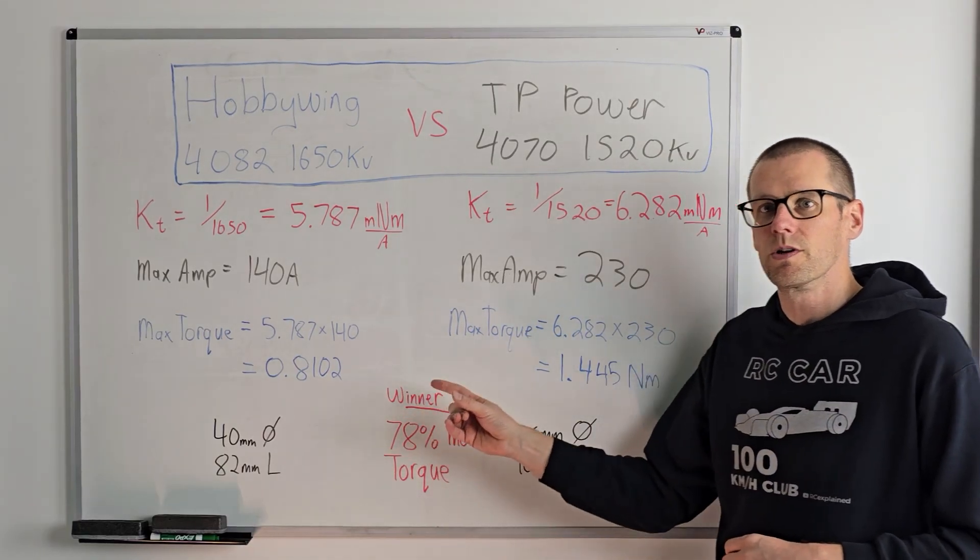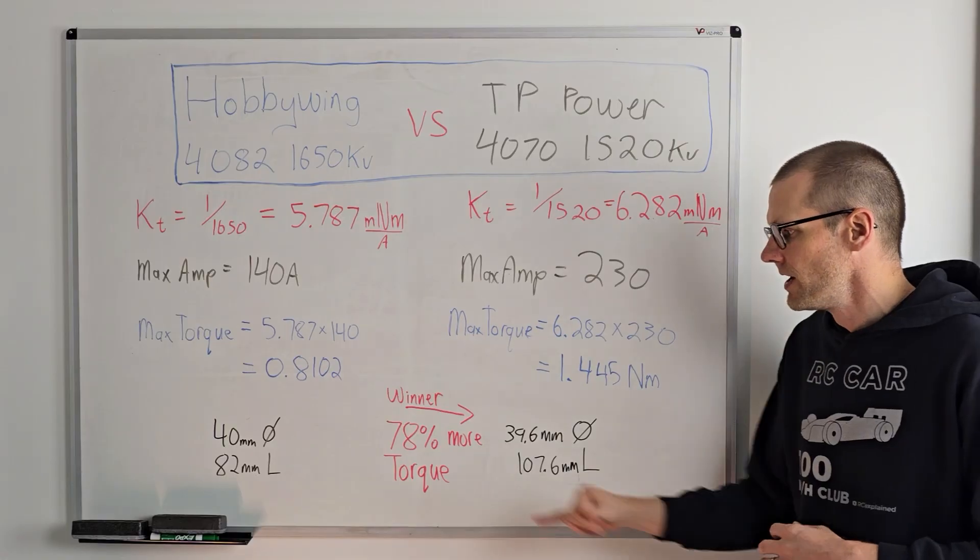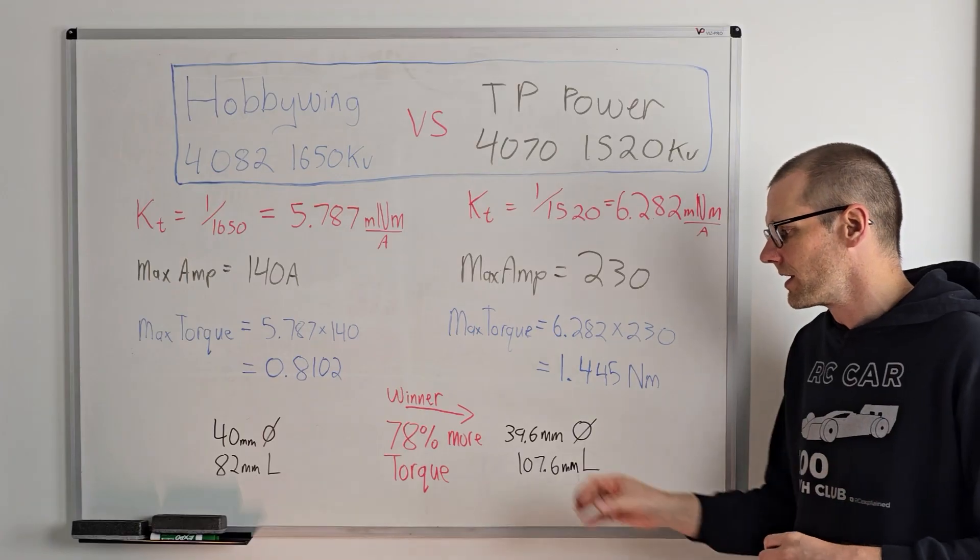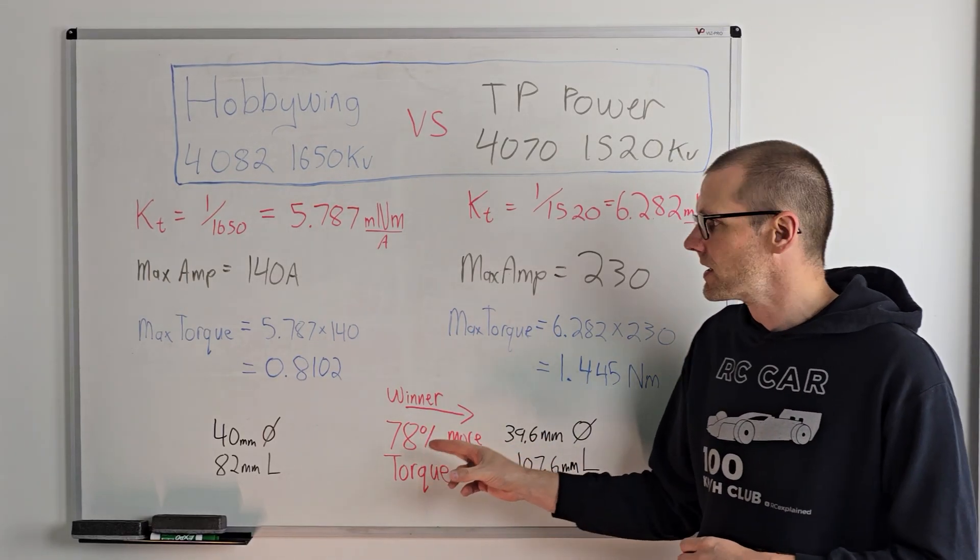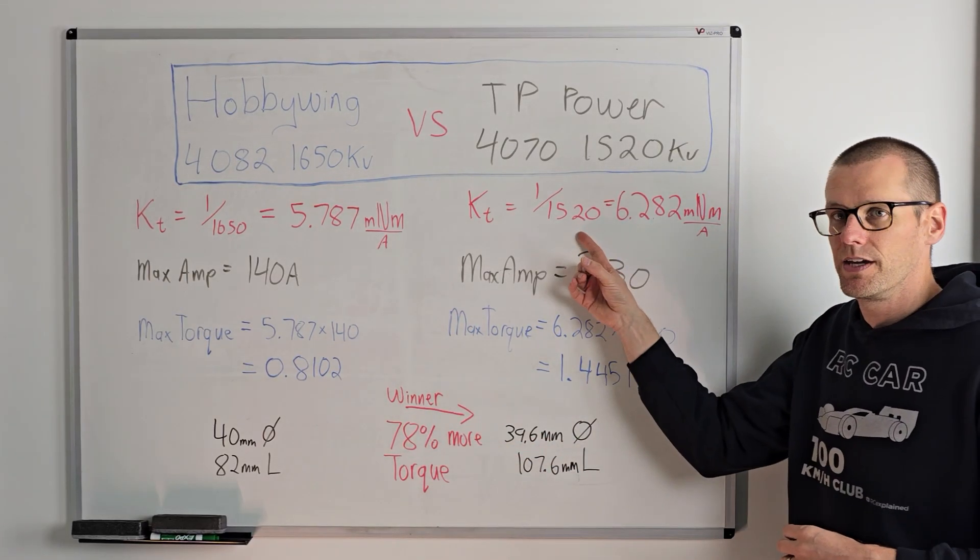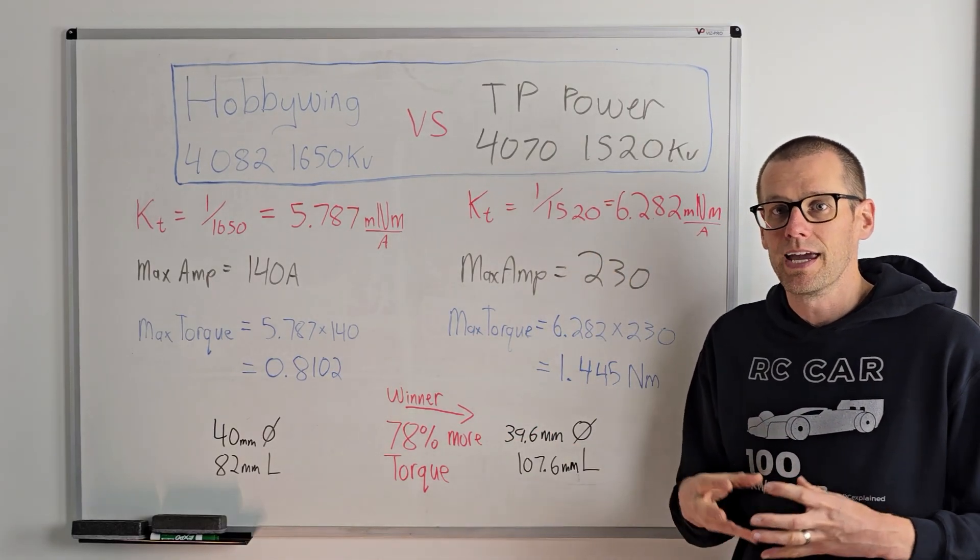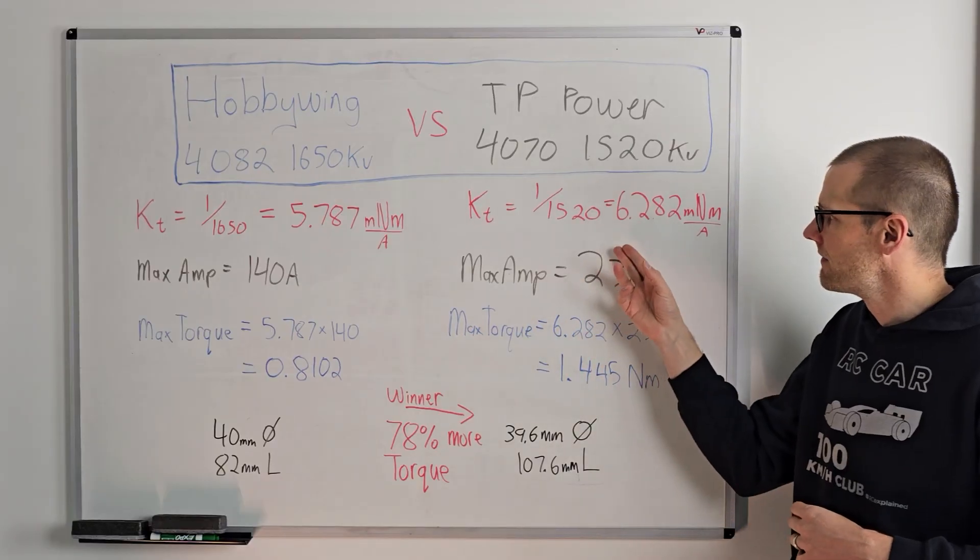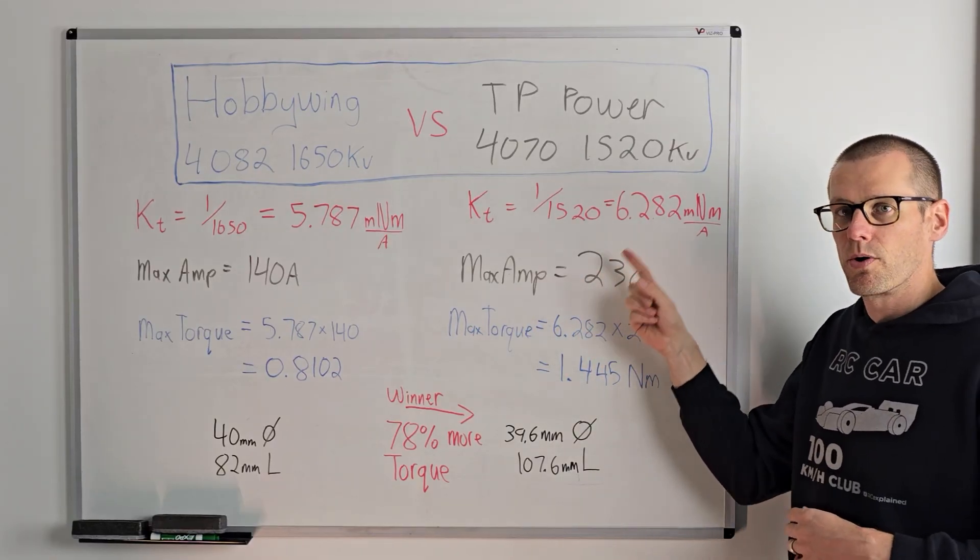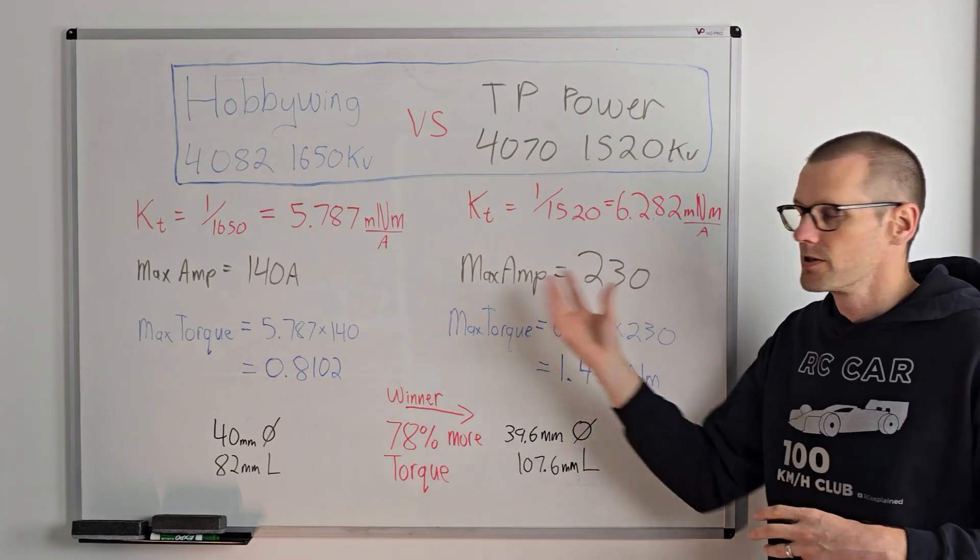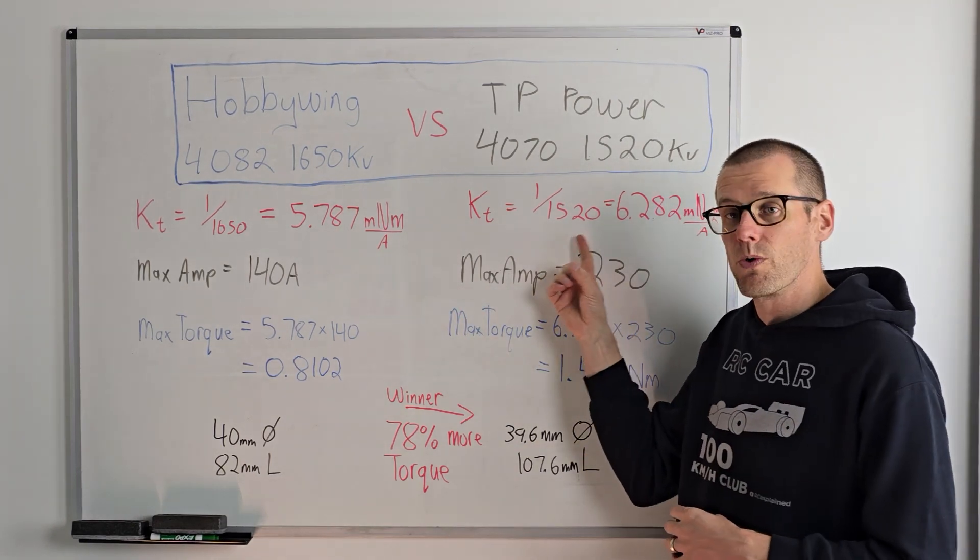The clear winner is going to be our TP power brushless motor. It delivers 78% more torque. That is quite incredible indeed. And we do this because we have a better KV. This KV is lower. So it provides a better KT value, meaning it delivers more torque per amp. All we need is the equal amount of amps between both these brushless motors and this motor already would win.